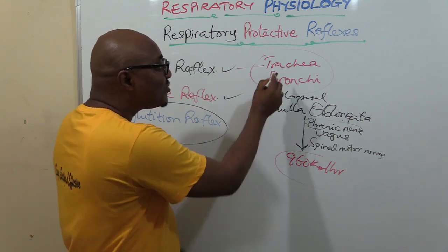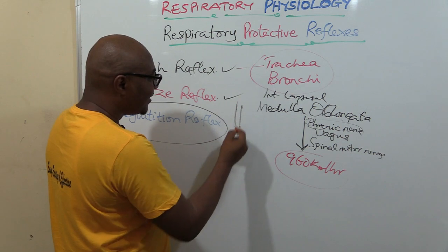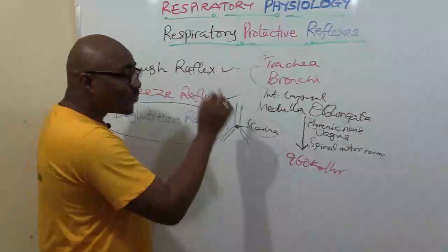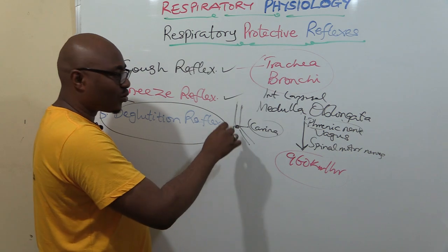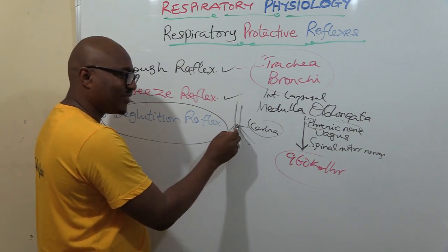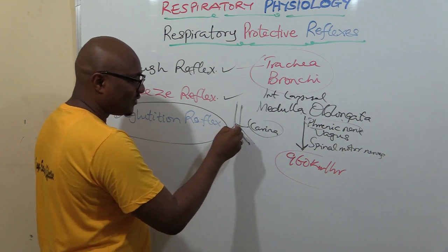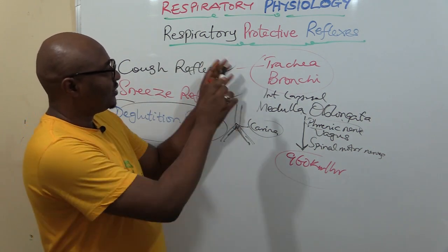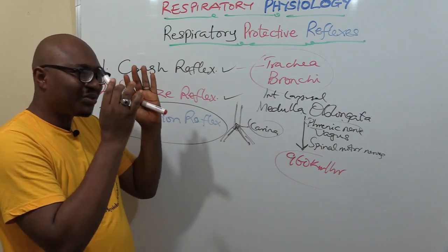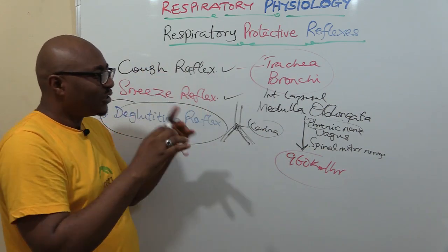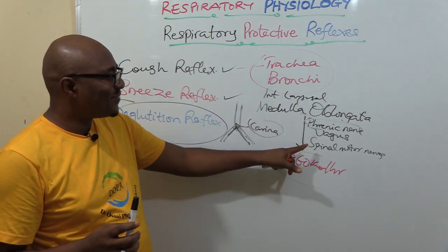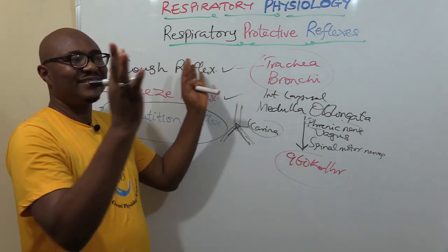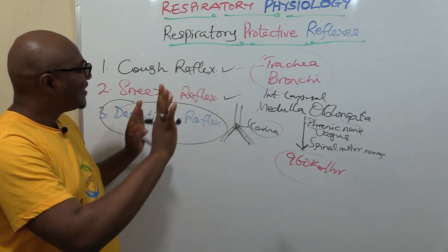One extra detail: at the junction where the trachea divides into the left and right bronchi, there is a point called the carina. The highest concentration of cough receptors is found at this point. To summarize the cough reflex: know the afferent nerve (internal laryngeal), the efferent nerves (phrenic, vagus, spinal motor), the muscles involved, glottis closure and opening, and the final forceful expulsion.